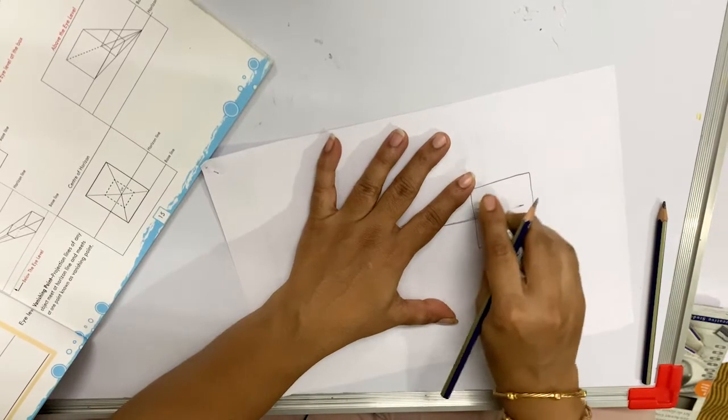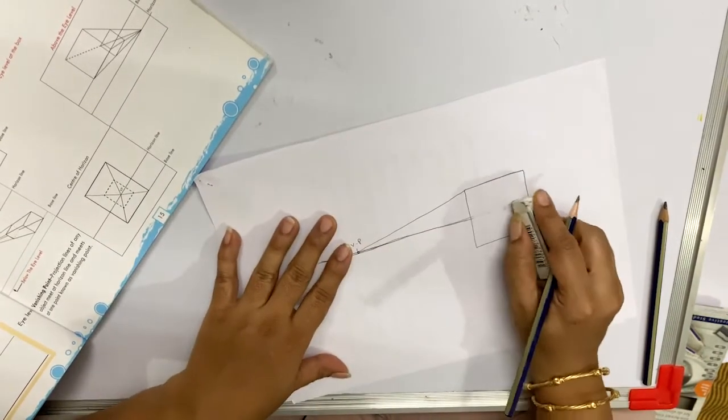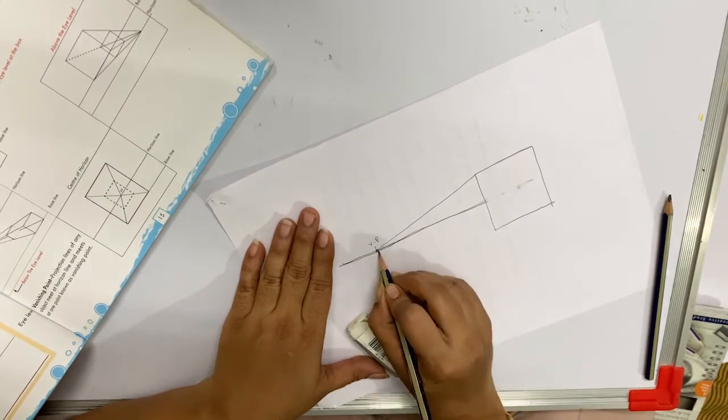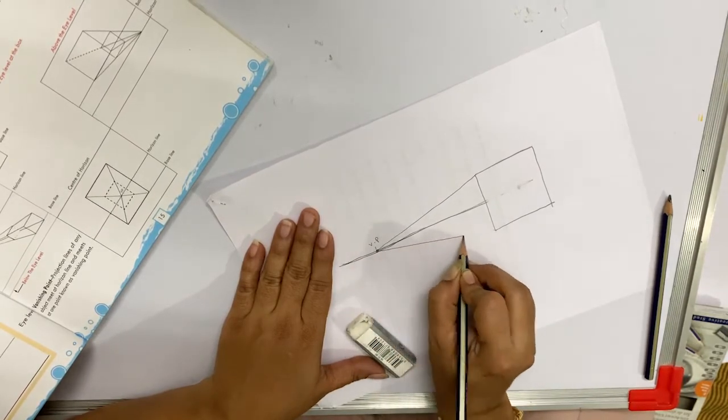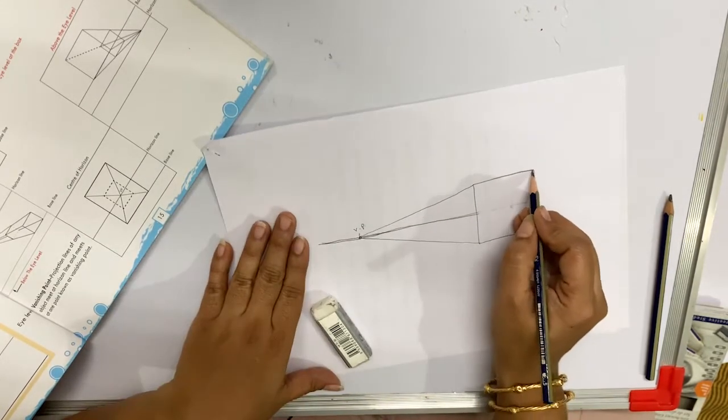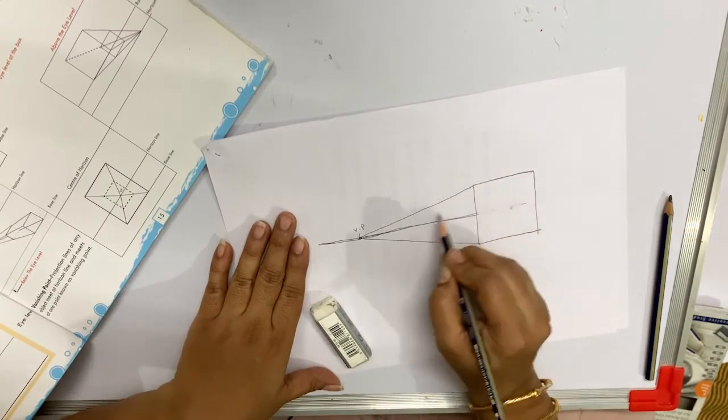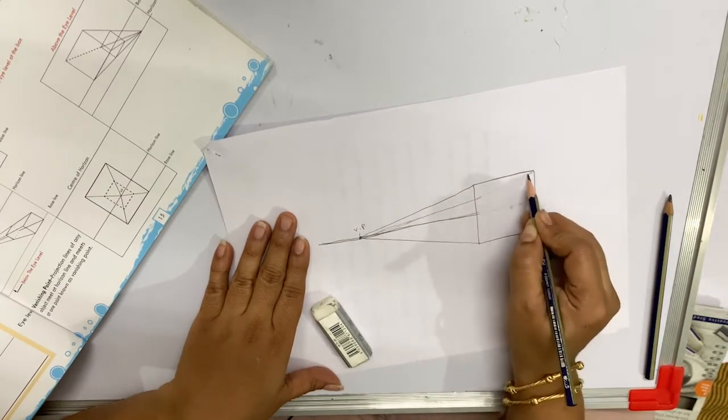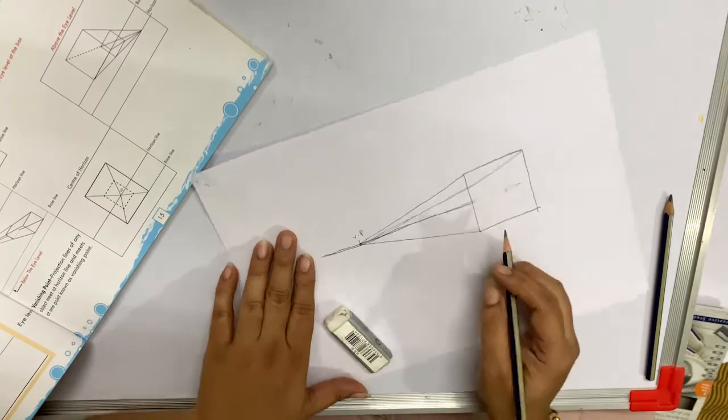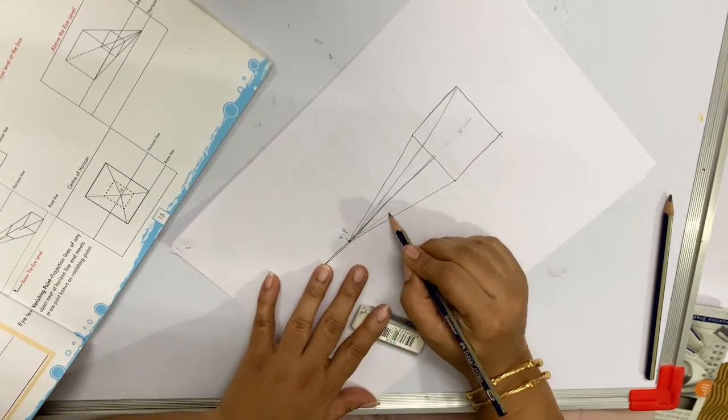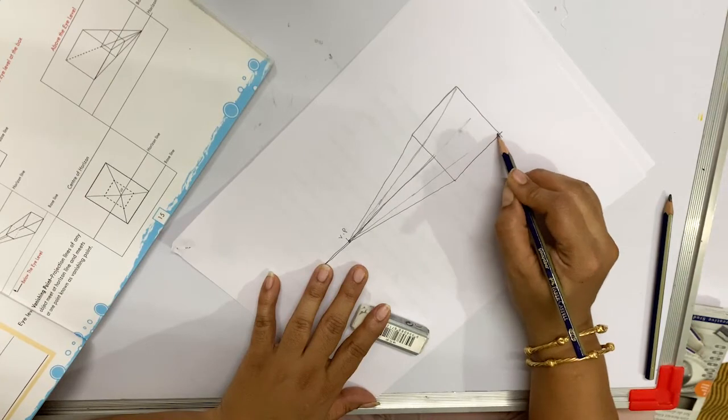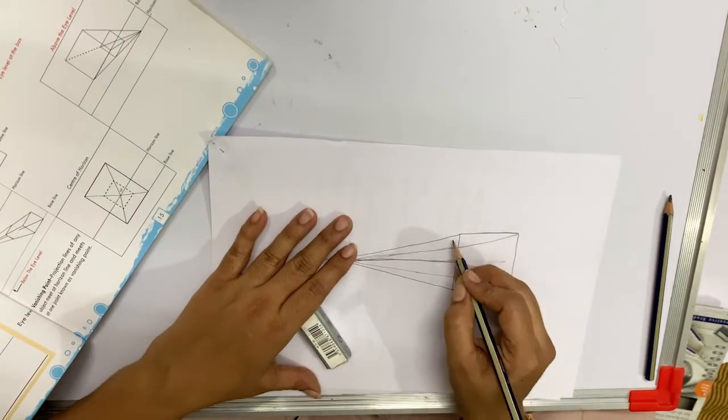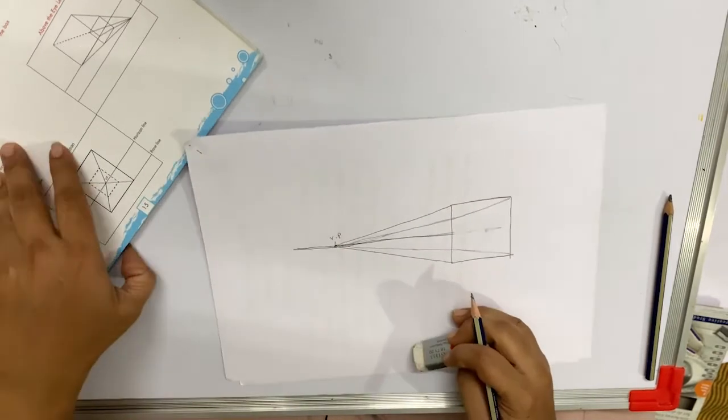Now this square's edges or corners, we will join with our vanishing point like this. Now this gives you a 3D effect.